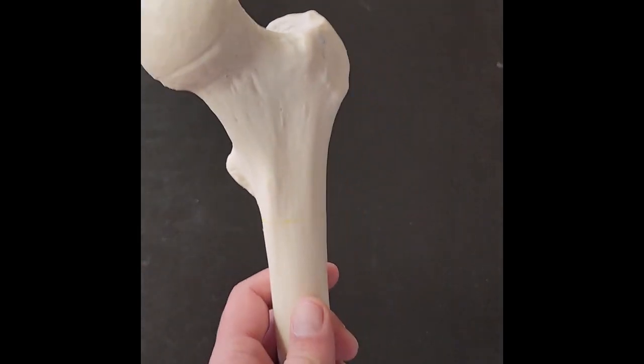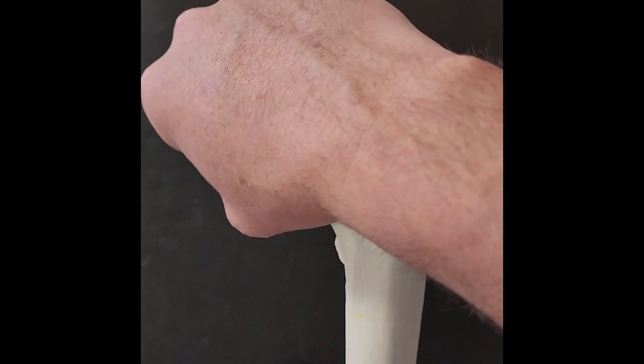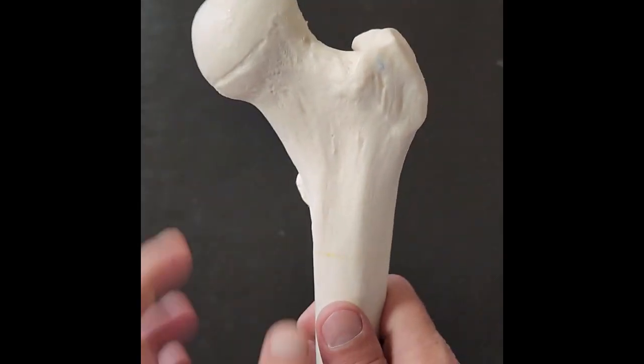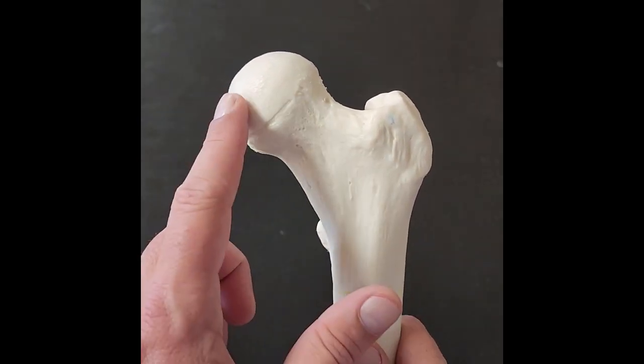So the first thing we've got is the femoral head. That's clearly this round part here. This is my femoral head. This is the neck of my femur right behind us. So we go head, we go neck. Femoral head, femoral neck.